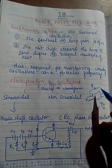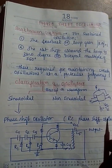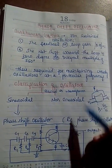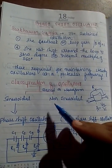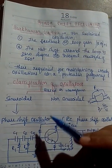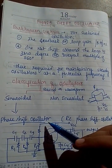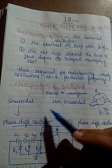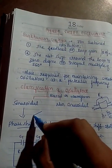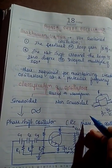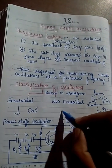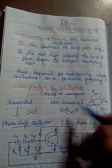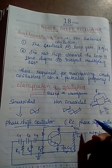Based on waveform classification, oscillators are classified into two types: sinusoidal and non-sinusoidal. Sinusoidal means the output is in the form of a sine wave — we refer it as a sinusoidal oscillator. If the output is a triangle wave or square wave, we refer it as a non-sinusoidal oscillator.